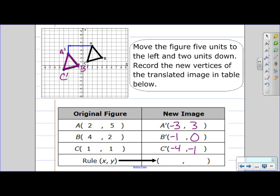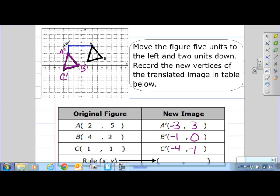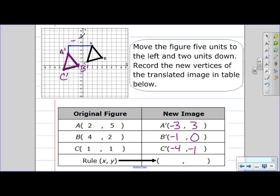And so now for the rule. So we went five to the left. Five to the left indicates subtracting five, and two units down indicates subtracting two.